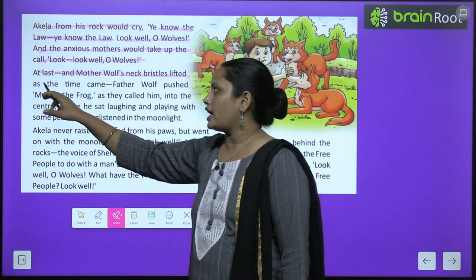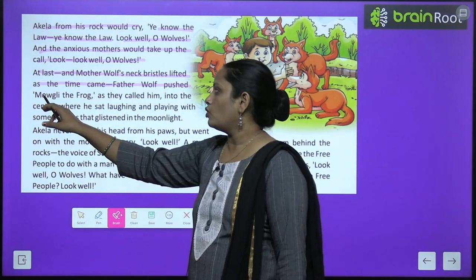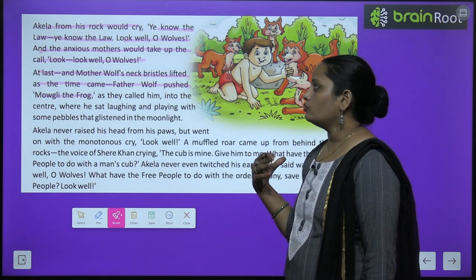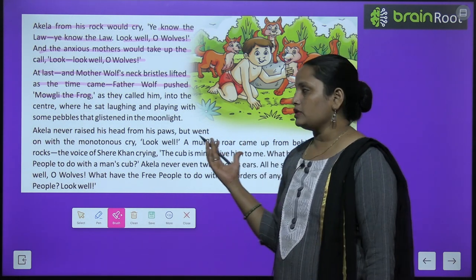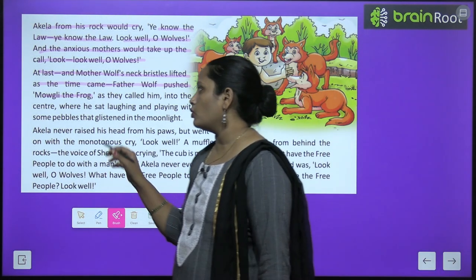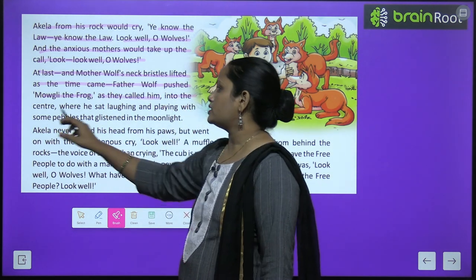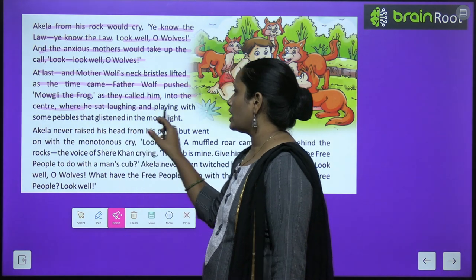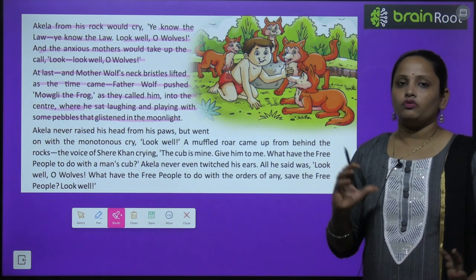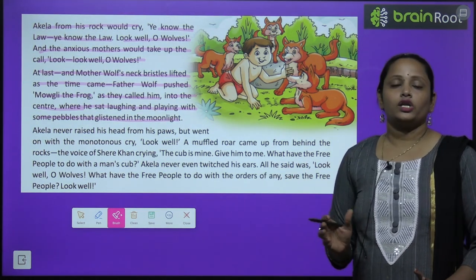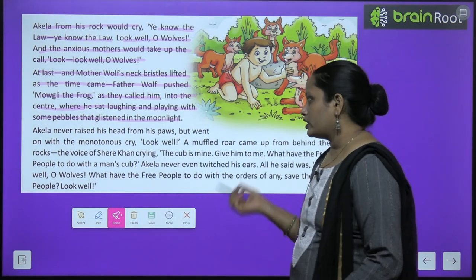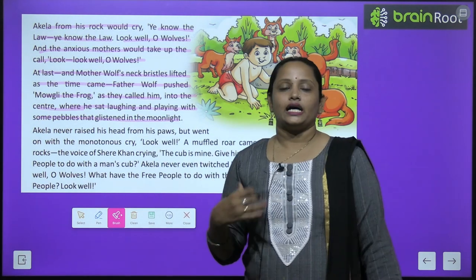At last the mother wolf's neck bristle lifted as the time came. Father wolf pushed Mowgli the frog into the center. Mother wolf ka jo neck tha unhone upar uthaya aur tab hi father wolf aaye aur unhone Mowgli ko aage ki taraf push kar diya. Uska naam tha Mowgli the frog — as they called him — where he sat laughing and playing with some pebbles that glistened in the moonlight.